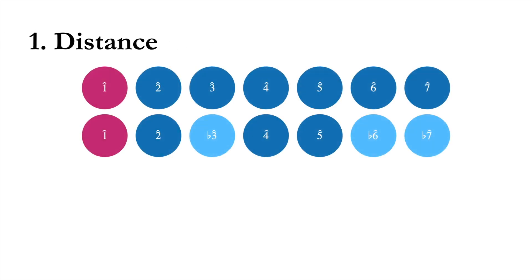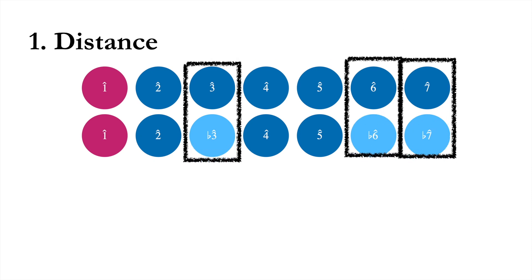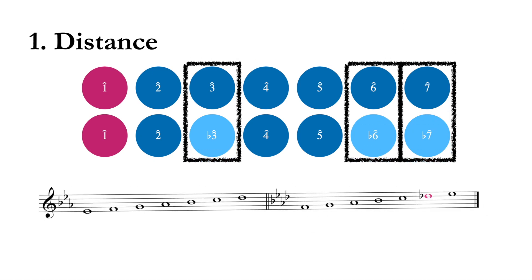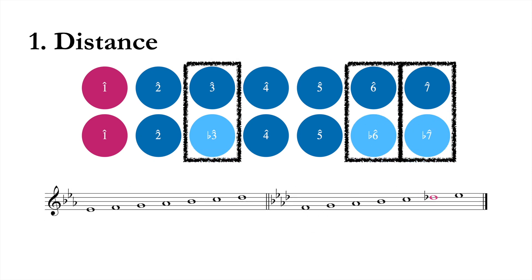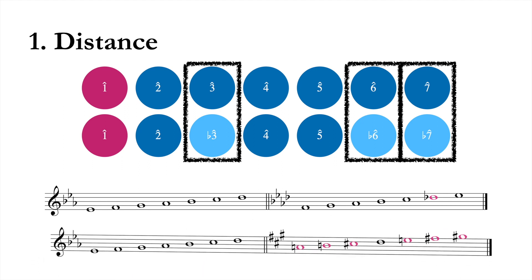There are two basic aspects of a modulation that determine how smooth it will sound. The first is the distance between the keys, as measured by the number of notes that change between the two scales. A modulation where only one or two accidentals change in the key signature is easier to make gradual than one where five or six accidentals change.